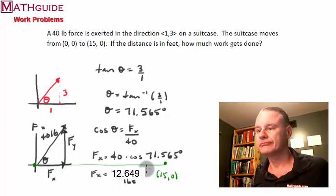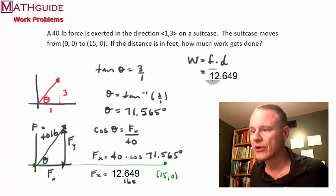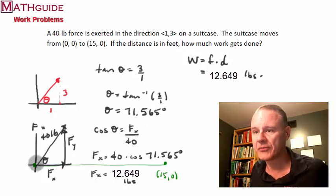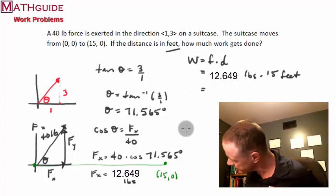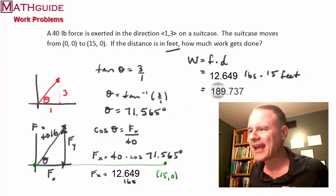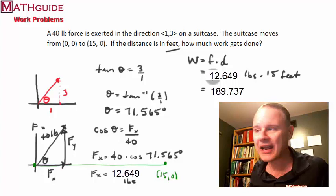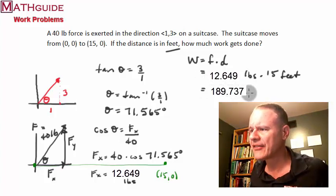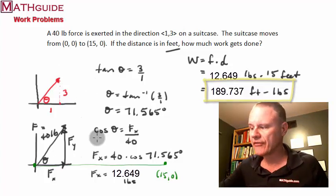Now we can calculate work: work equals force times distance. We take our horizontal force of 6.326 pounds and multiply it by the distance of 15 feet — since we're going from (0, 0) to (15, 0). That gives us our final answer in foot-pounds.